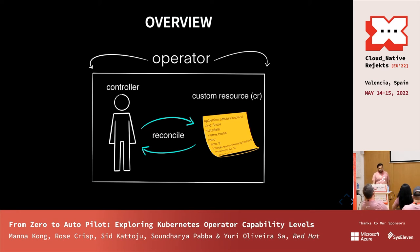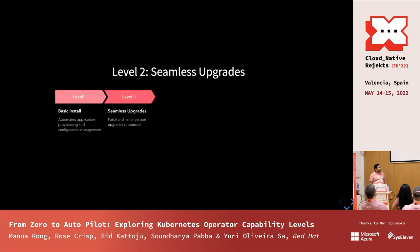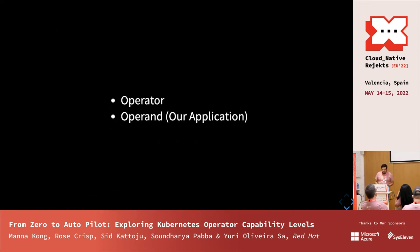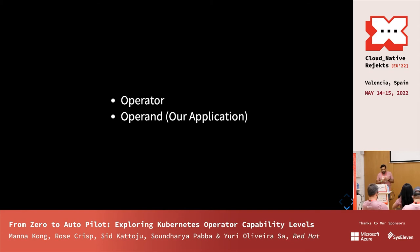Sid will now talk about Level 2 and Level 3, since one of our speakers couldn't make it. Level 2 is described by the operator framework as the capability of your operator to do patch and minor upgrades — for both your operand and your operator. There are two layers here: the operand and the operator, and the way updates are rolled out differs for each.